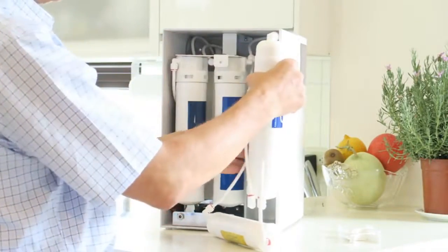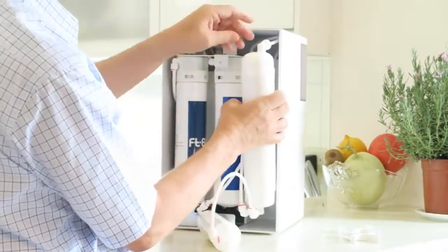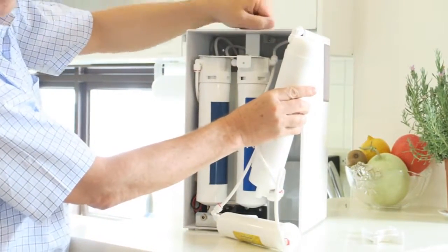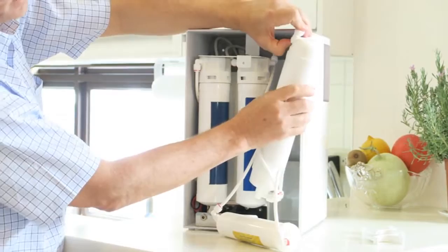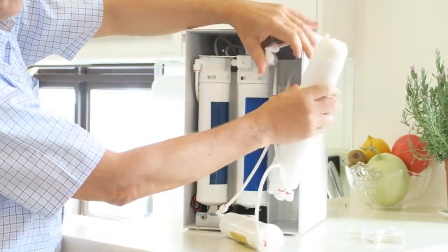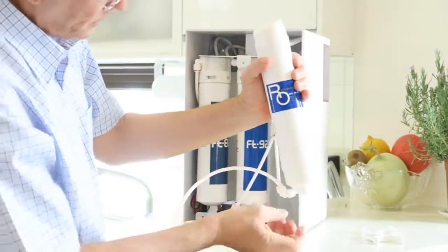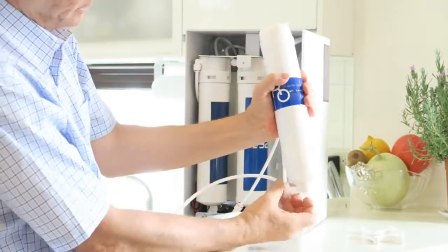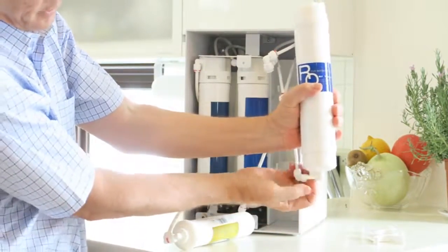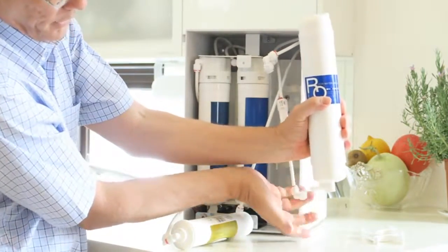And to remove the connectors from the RO membrane is actually very simple. It also has the quick connectors at the top. Now for the RO membrane, all you have to do is slide the collet up, slide the membrane off. At the bottom, you have the same two quick filters. Just push the collet in and slide the pipe off.